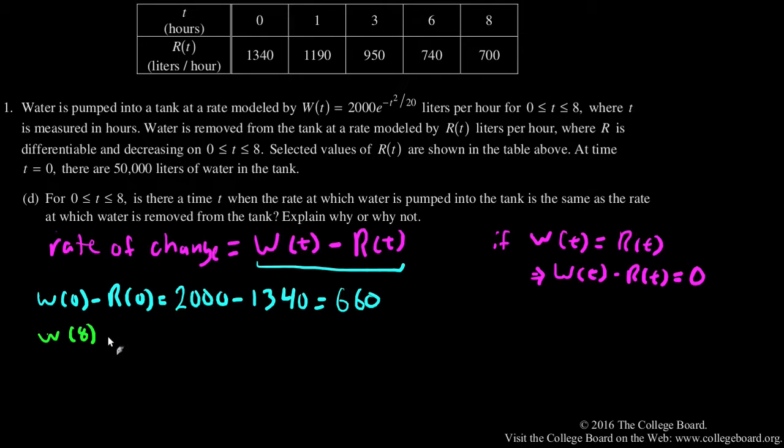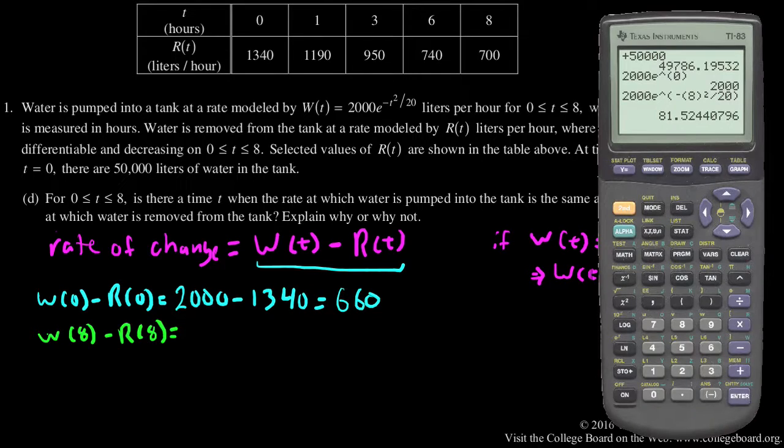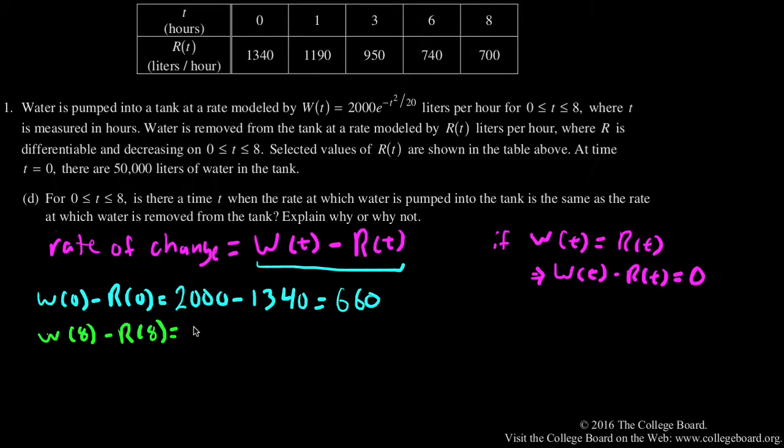W of 8 minus r of 8 is, let me double check, 81.524 minus 700, which is going to be approximately negative 618.476.